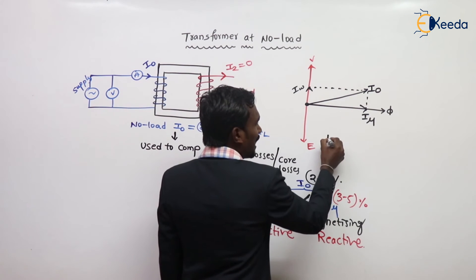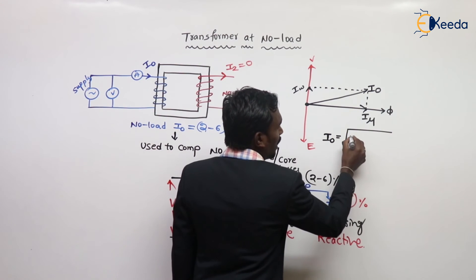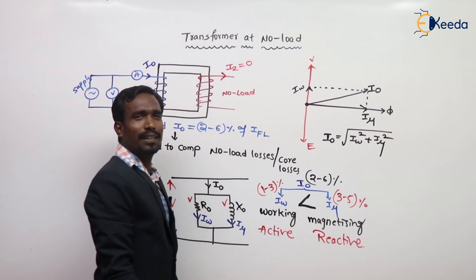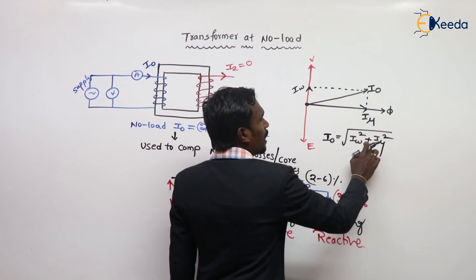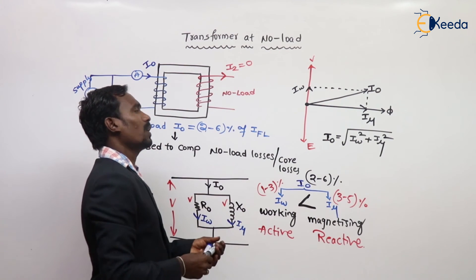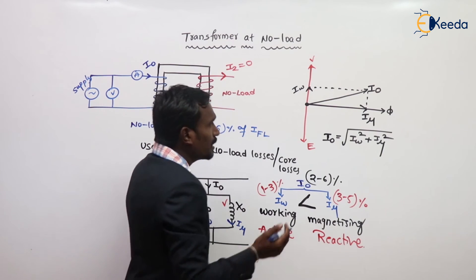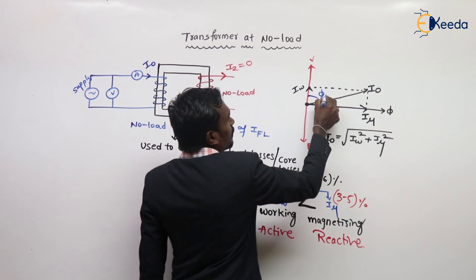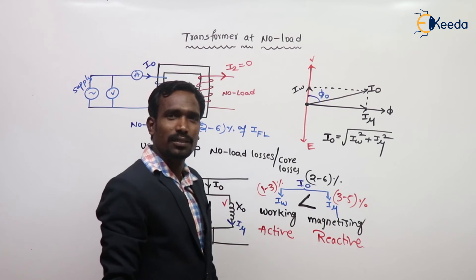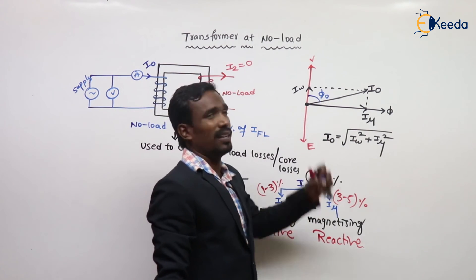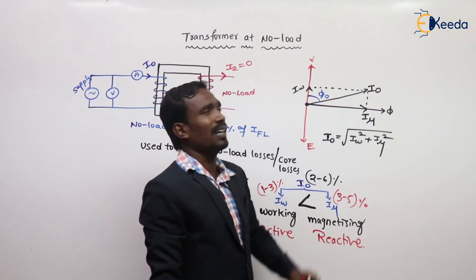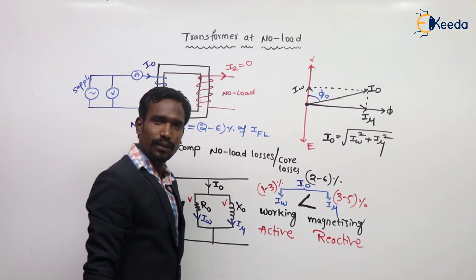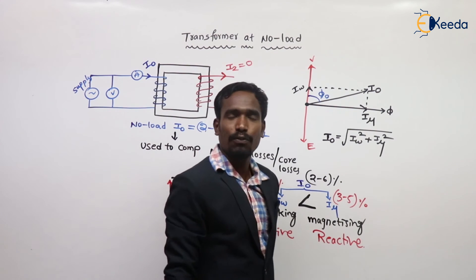I0 equals the square root of Iw² plus Imu². The angle between voltage V and I0 is the no-load power factor angle phi0. This is the no-load vector diagram of my transformer, and this is the no-load equivalent circuit.